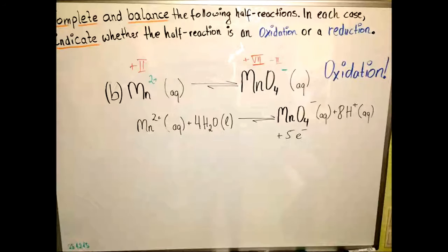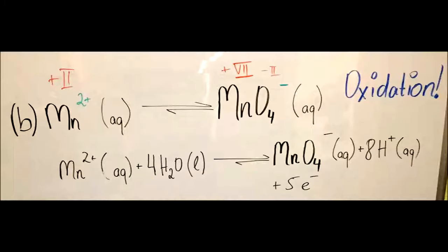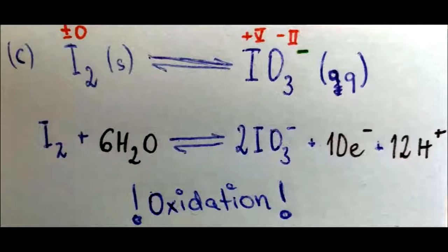The next example is the oxidation of manganese. Manganese in permanganate (MnO₄⁻) has four oxygens at minus two each, giving minus eight; with an overall charge of minus one, manganese has an oxidation state of plus seven. Manganese(II) has an oxidation state of plus two. Going from plus two to plus seven requires five electrons, and we need four water molecules to balance the four oxygens, producing eight hydrogen ions.